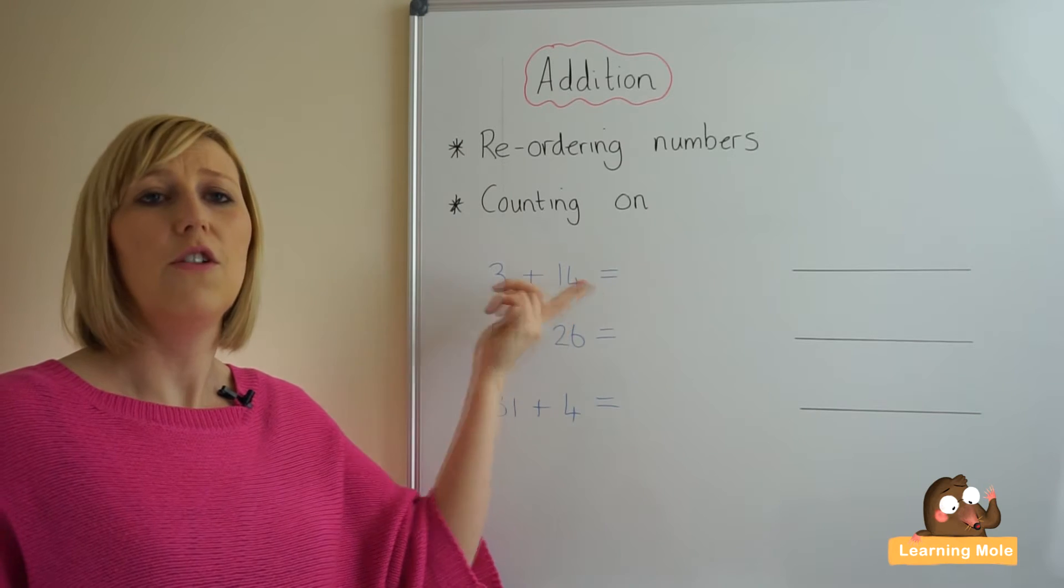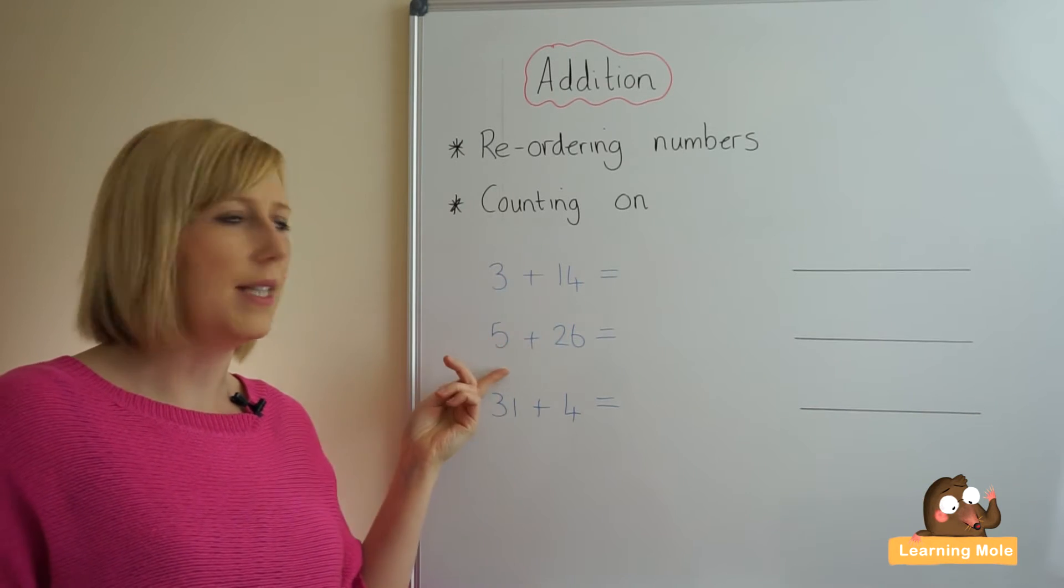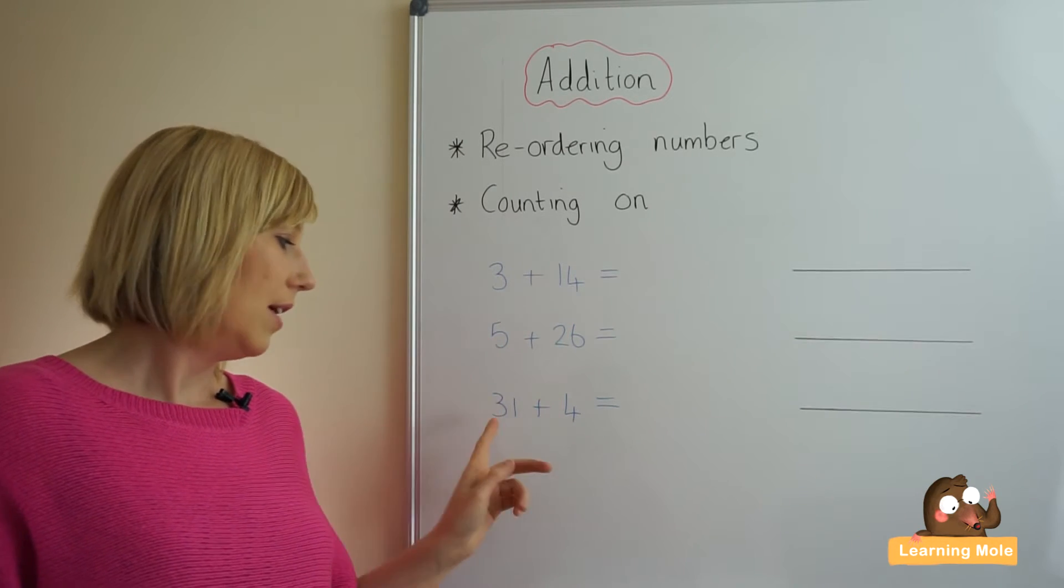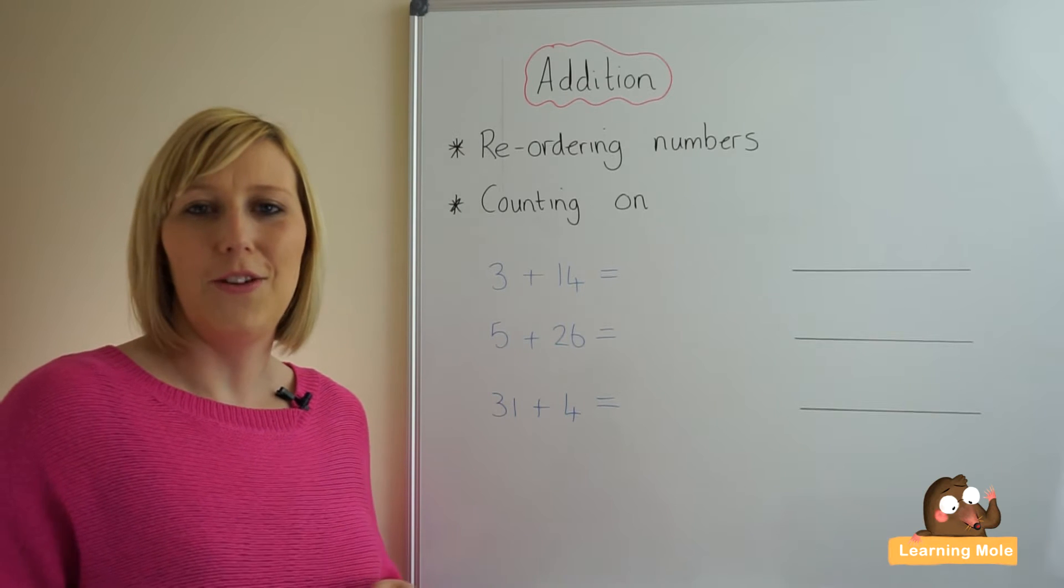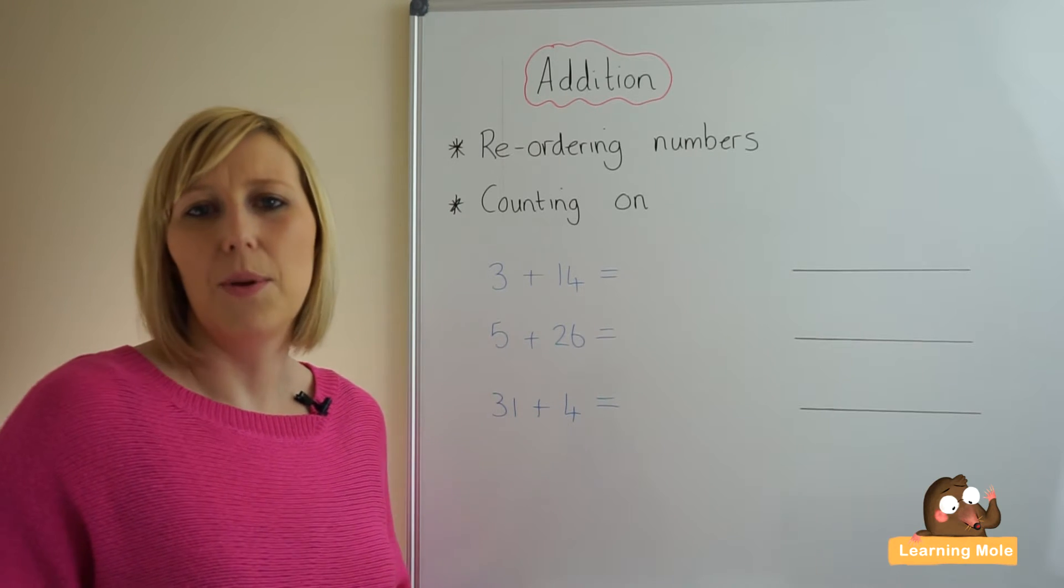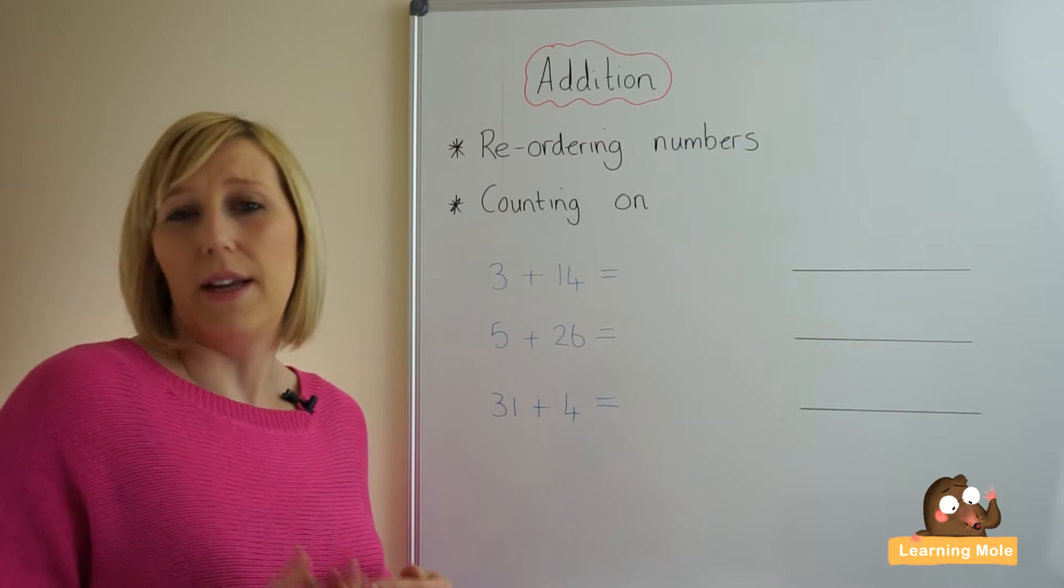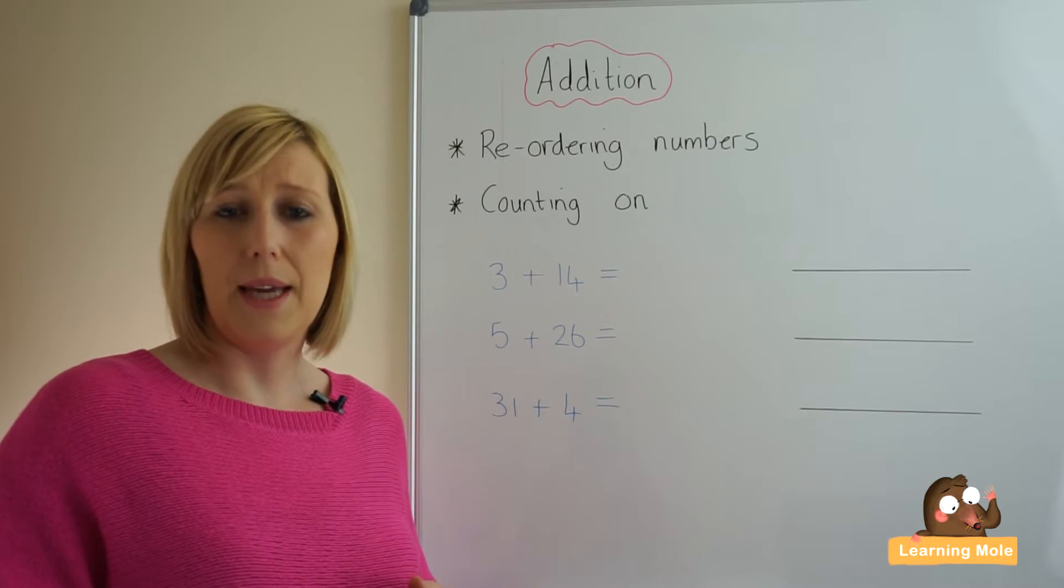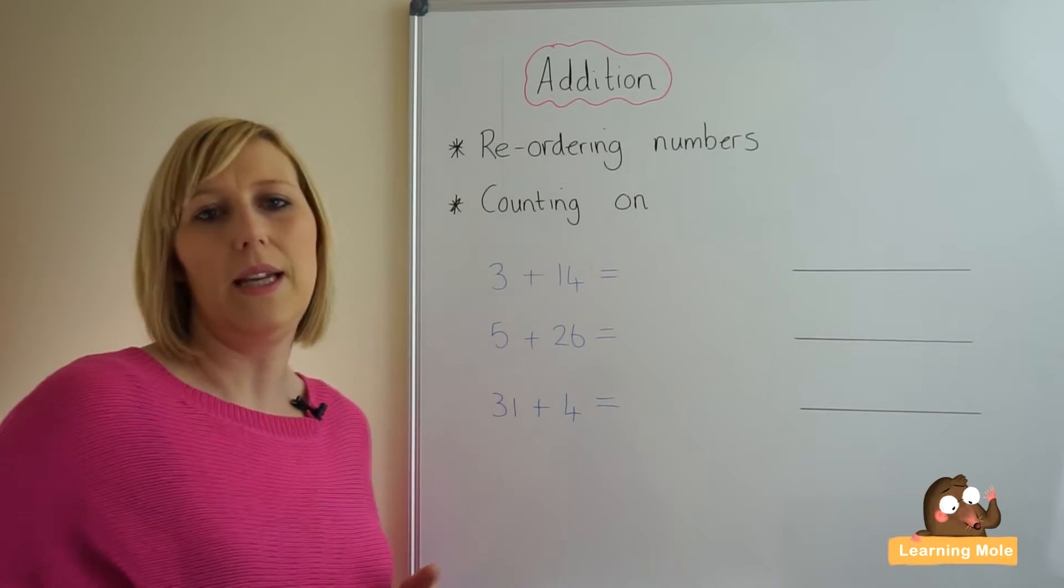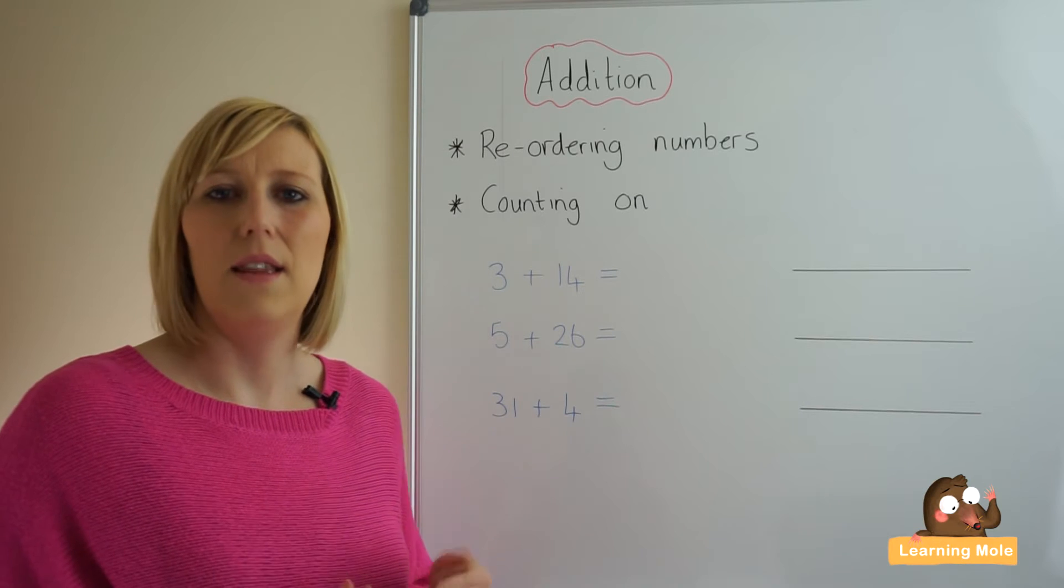So they will then change it to 14 add 3, 26 add 5, and they can leave the last one 31 plus 4. It is nice to put a little one in there that maybe is already correct to let your child pick that out and say oh I don't need to do anything to that one. That one is already in the right order.